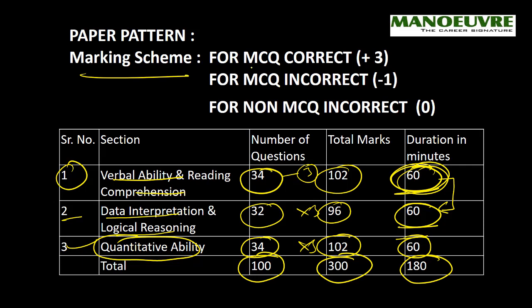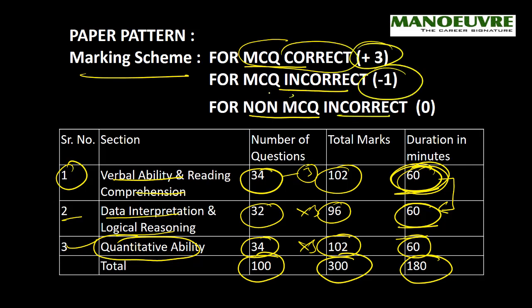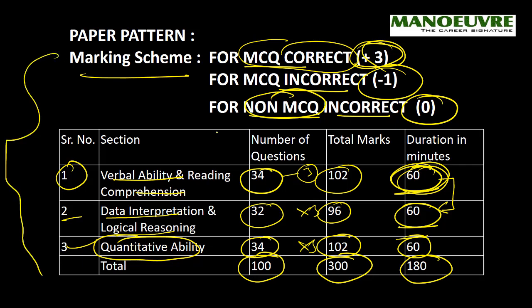Marking-wise, there are two types: MCQ-based questions and non-MCQ-based questions. In MCQ-based questions, if correct you get 3 marks, and if wrong you are penalized by minus 1. For non-MCQ questions, if wrong you are not penalized, and if right you get 3 marks. This is the paper pattern of CAT.